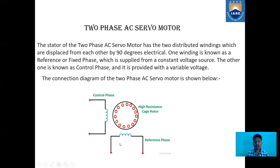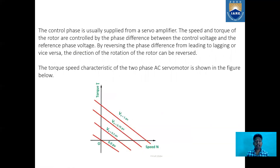One winding is known as the reference or fixed phase. This reference winding is supplied from a constant voltage source. The other one is known as the control phase and it is provided with a variable voltage.